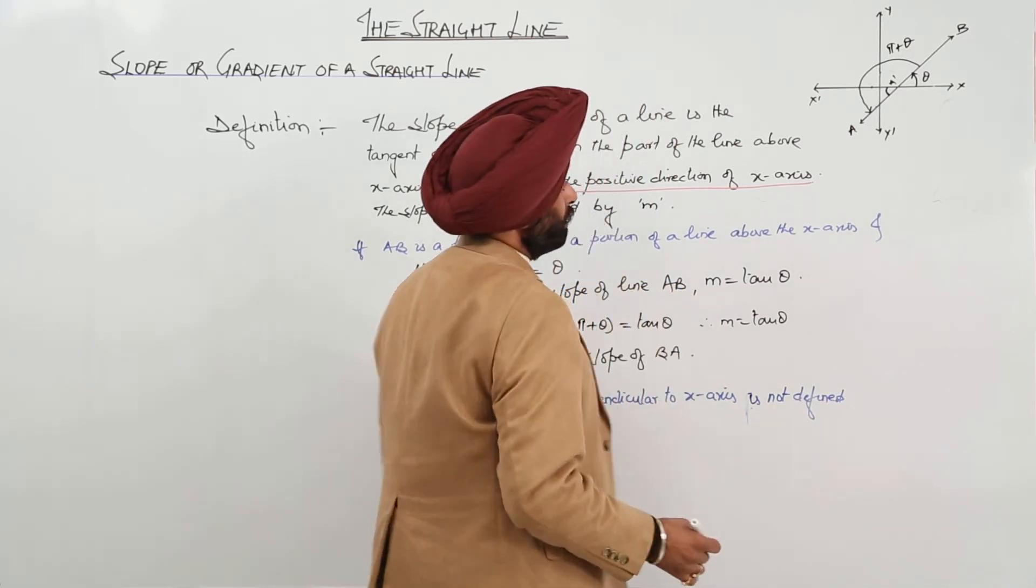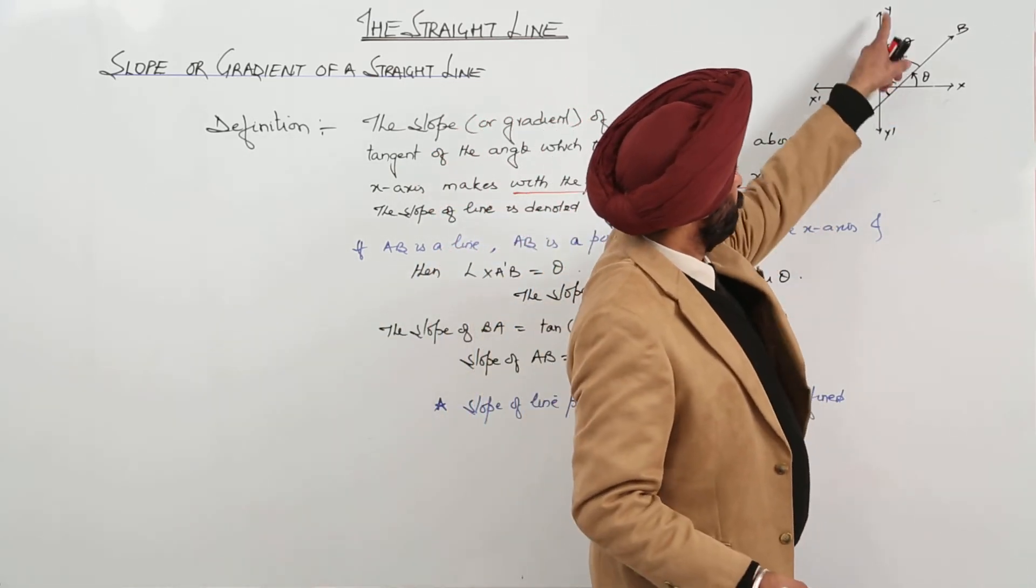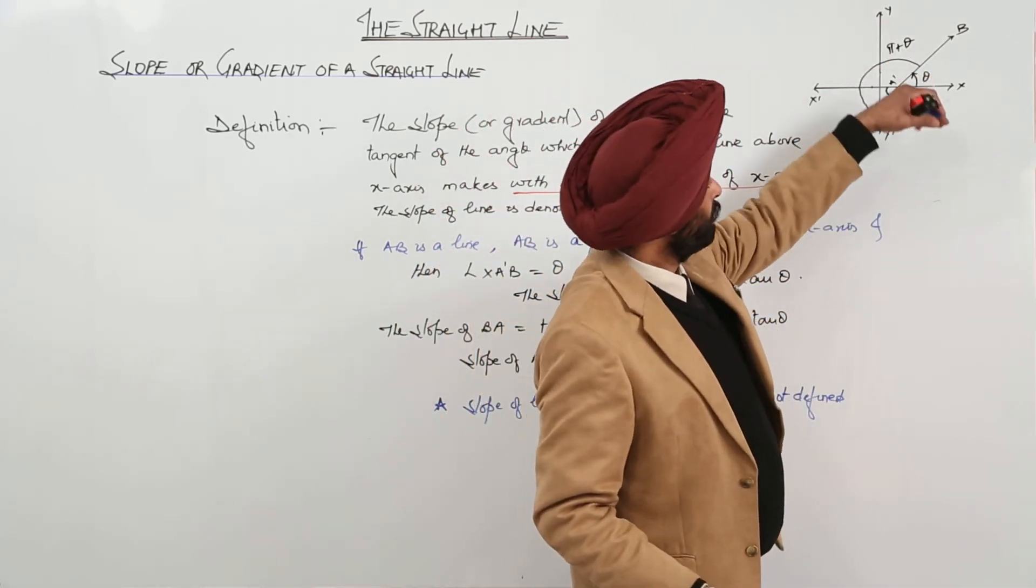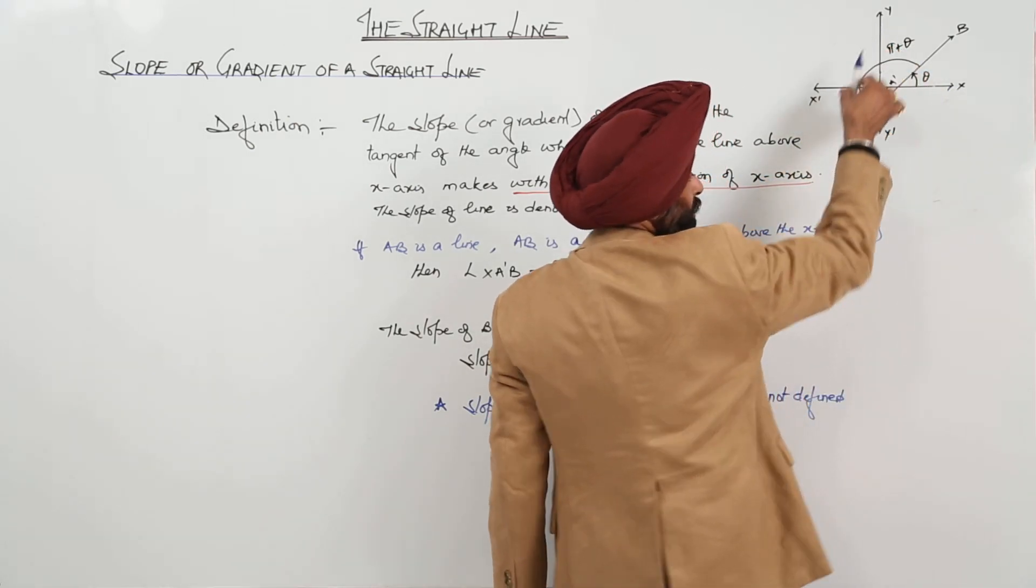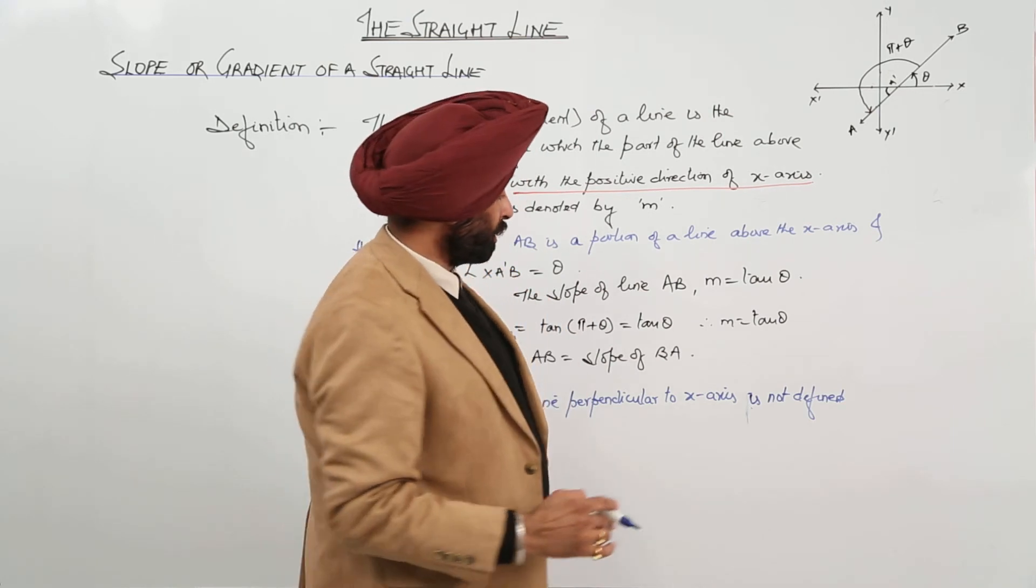So, slope of line perpendicular to x-axis is not defined. Now, which part? This part. If suppose, we can say y-axis, a line from x-axis like this one and moving till y-axis, it makes an angle of 90 degree.